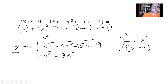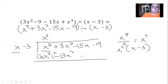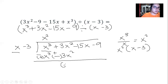We change the sign of each term — minus becomes plus. Then we simplify: 3x squared and 3x squared combine to give 6x squared. We then bring down the next term.